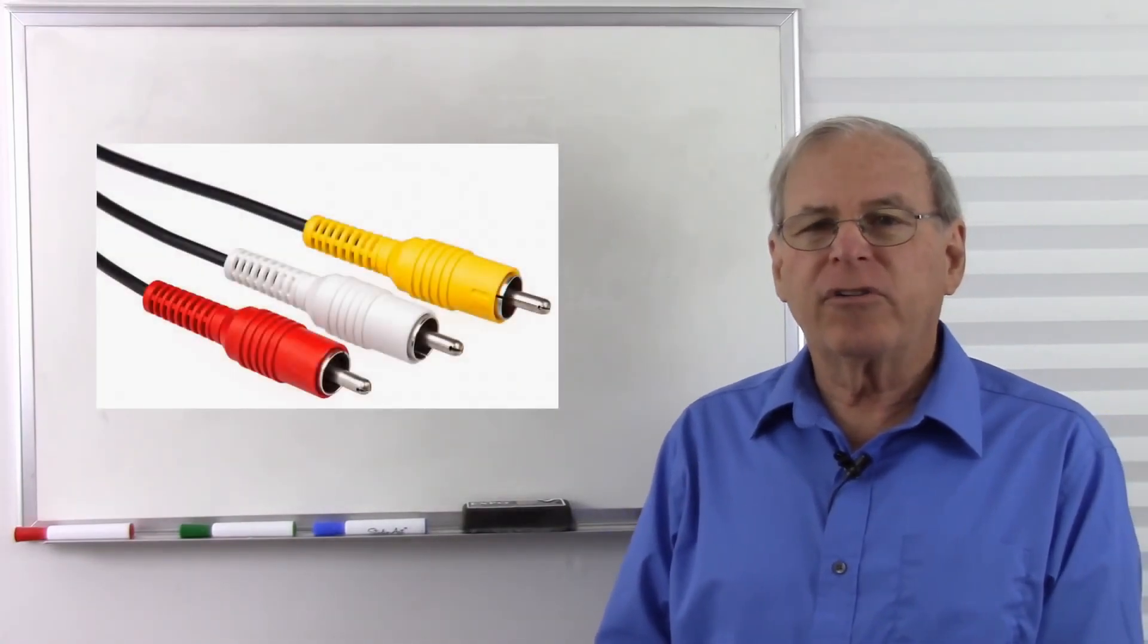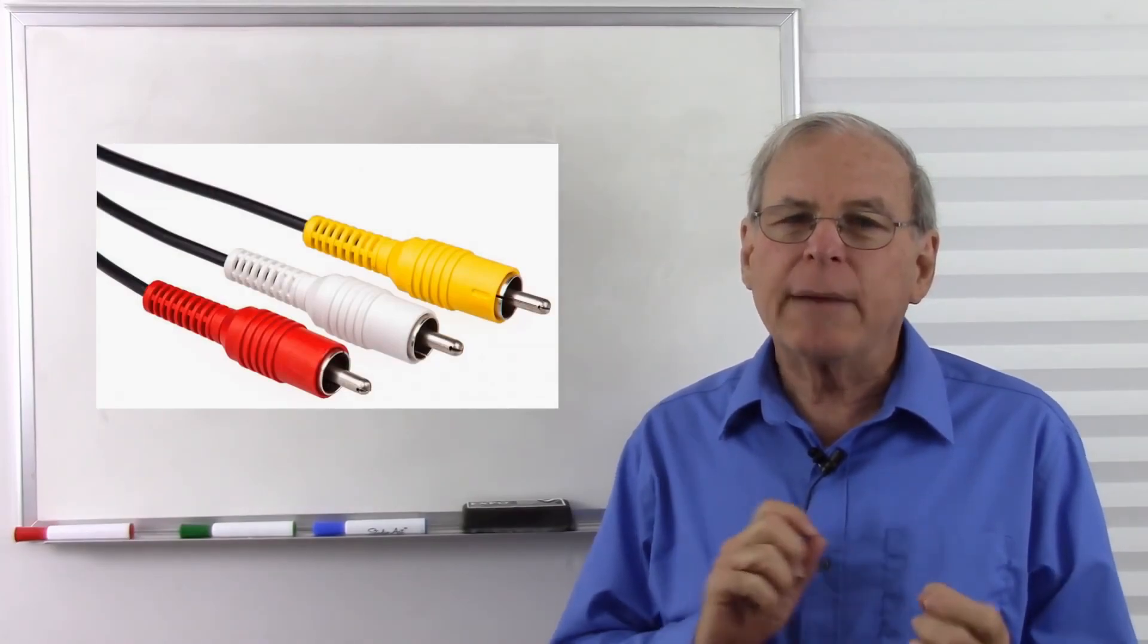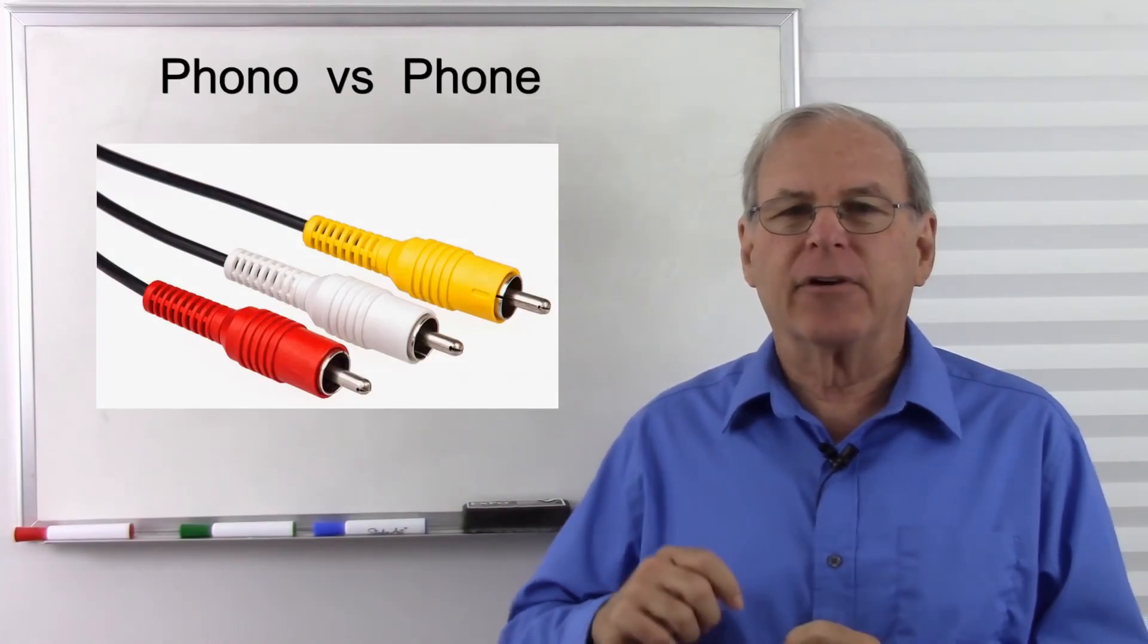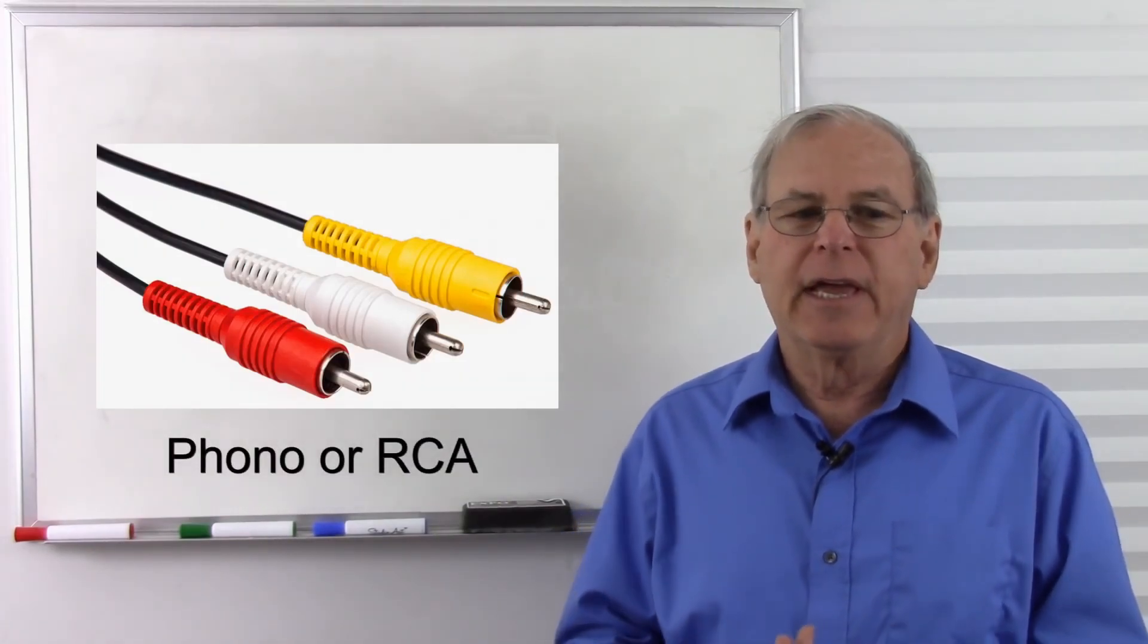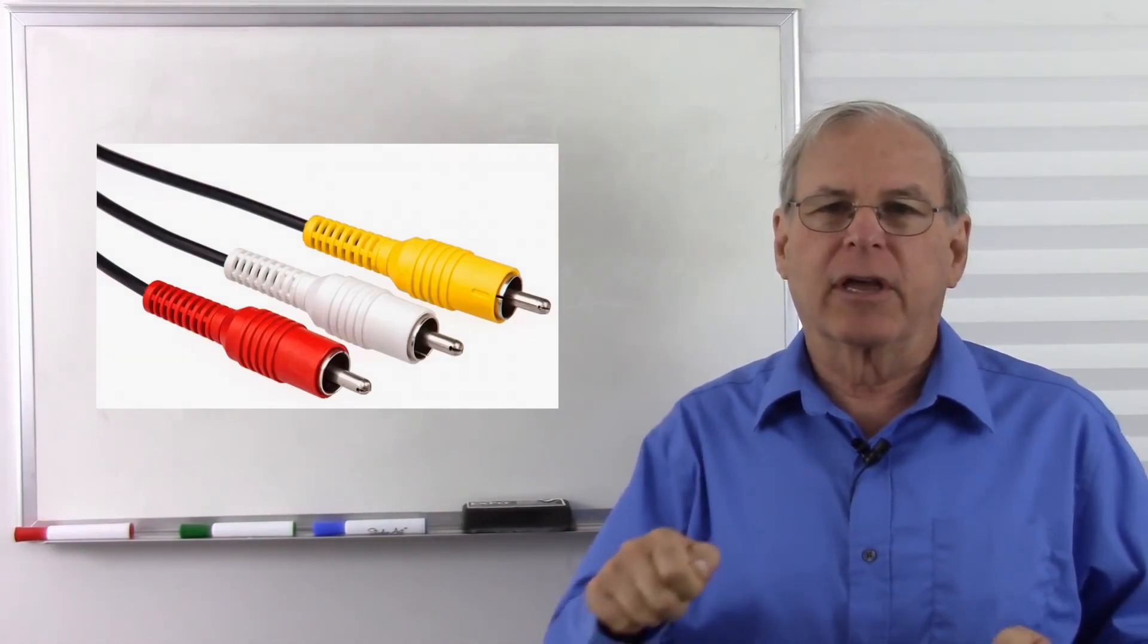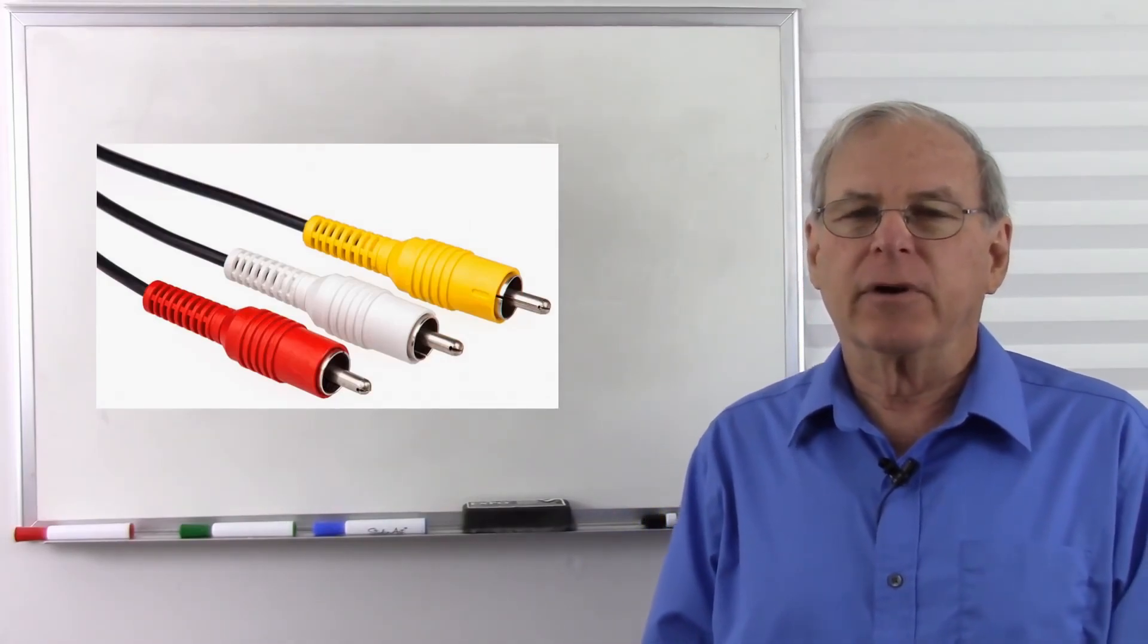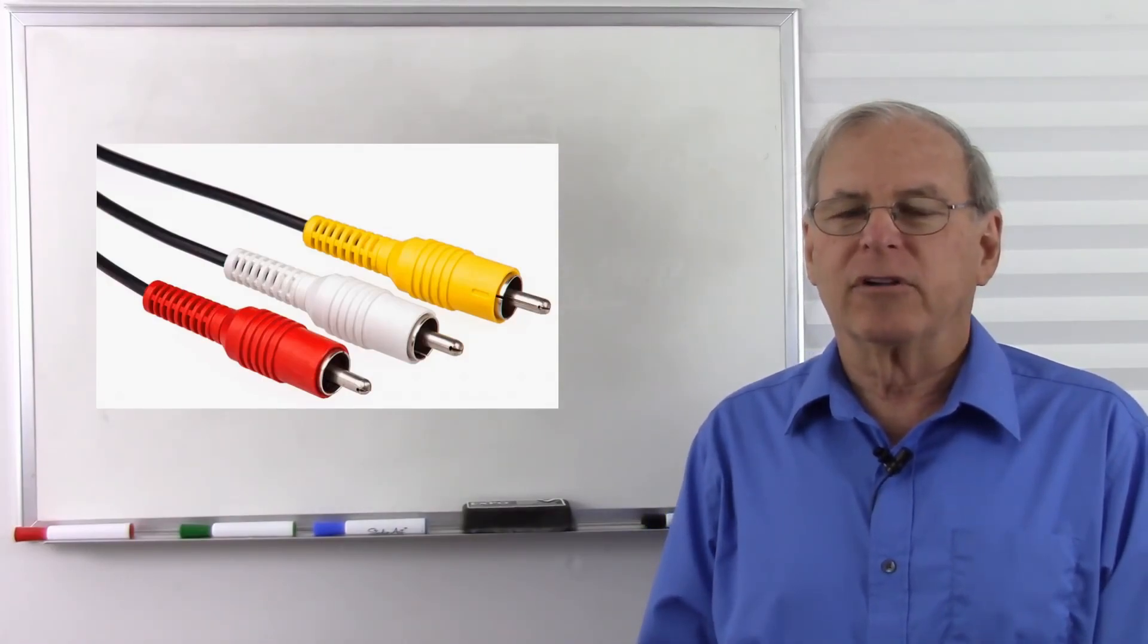This is called either an RCA connector or often called a phono connector. There's the phono connector, and then there's the phone connector. This is the phono, meaning phonograph. This is the type of connector that's used in the back of stereo equipment to connect different components to each other if you have a multi-component system. Also used to connect video and audio for video systems, at least the older ones before such connections as the HDMI came out.